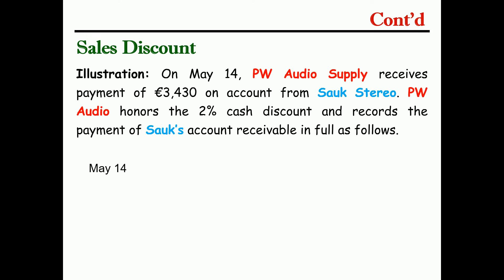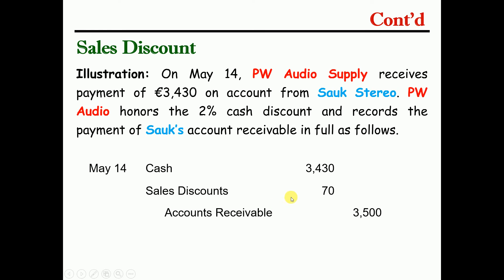Sales discount: if the customer pays within the discount period, they will receive a discount. You record cash debit, sales discount debit, and accounts receivable credit. The price of the sale is reduced by the discount percentage. We will pay from the contra sales account.